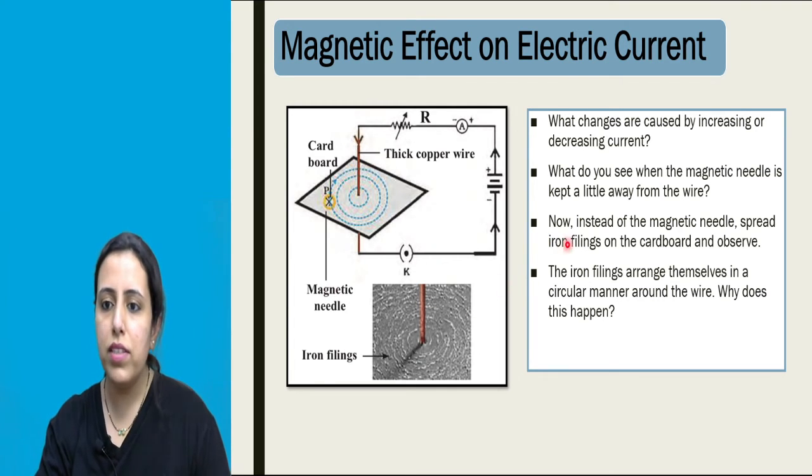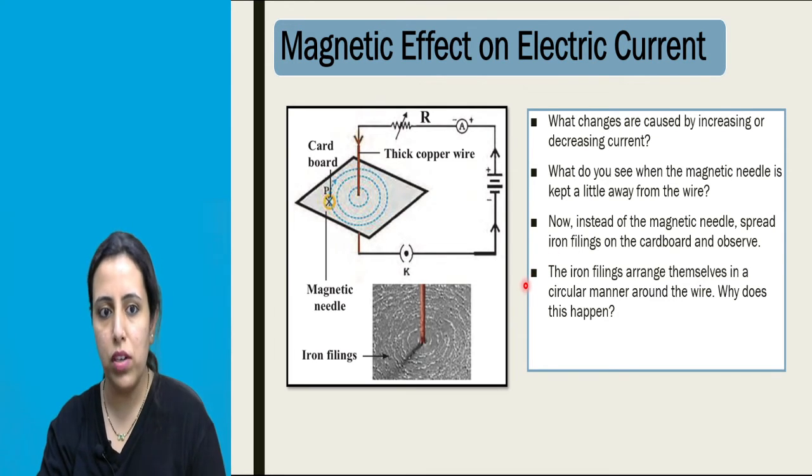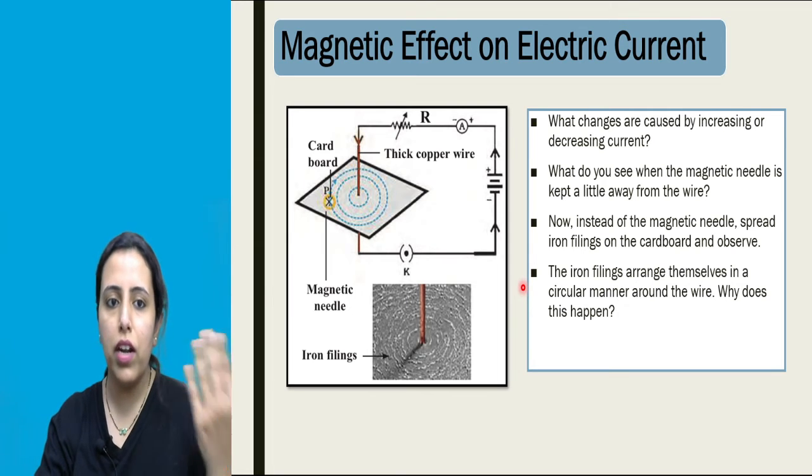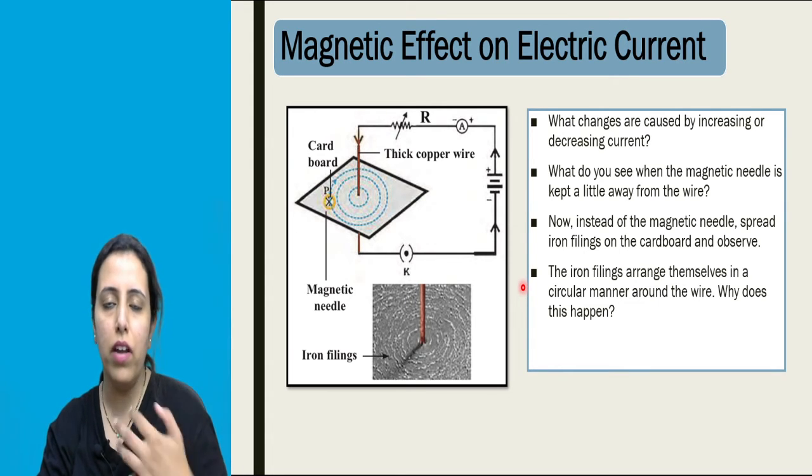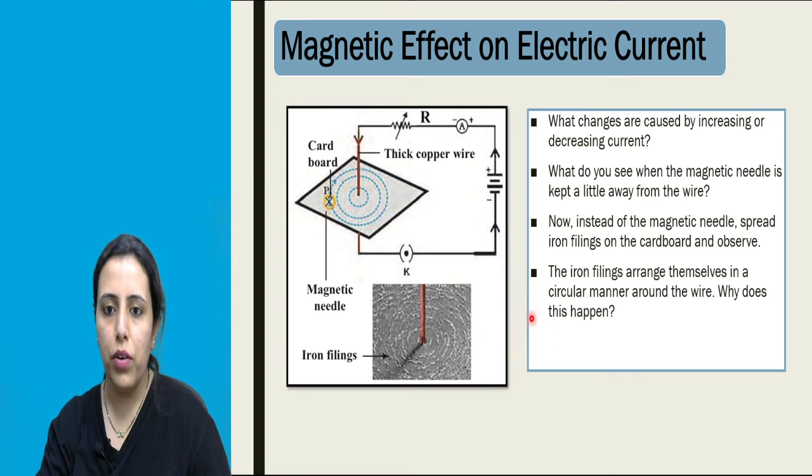Next question. Instead of magnetic needle, spread some iron filings on the cardboard and observe. That's what we have observed. We will get concentric circles. If the conductor is strong, they will accumulate strong or we can say they will be dense at the center and as we move away, it will become wider.